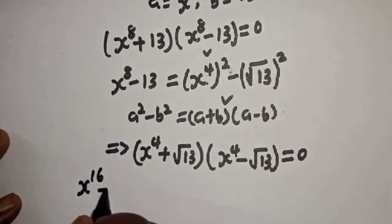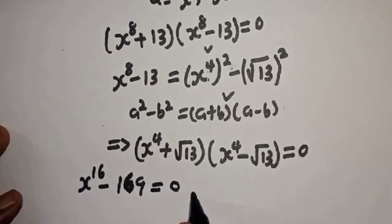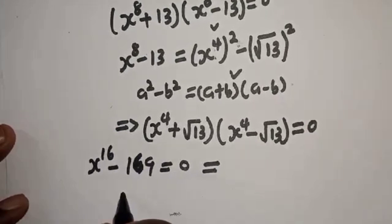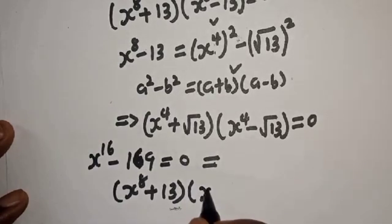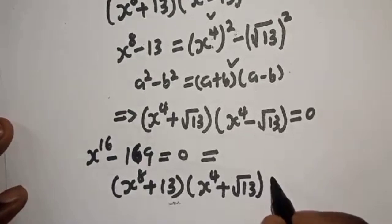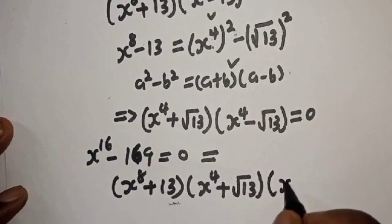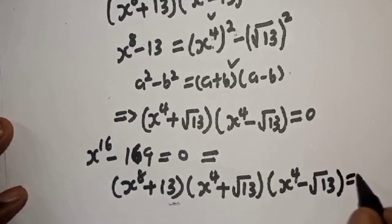So the full factored form of s raised to power 16 minus 169 equals 0 is: s raised to power 8 plus 13, bracket s raised to power 4 plus square root of 13, bracket s raised to power 4 minus square root of 13, everything equal to 0.